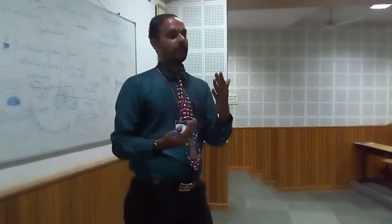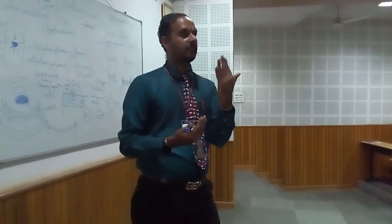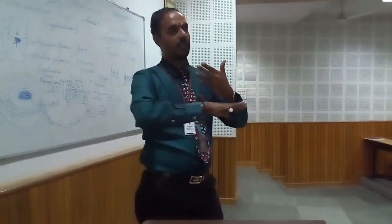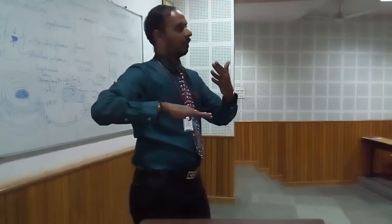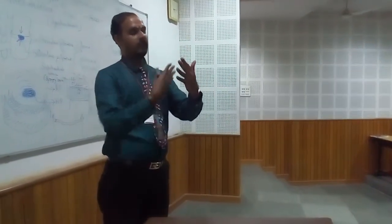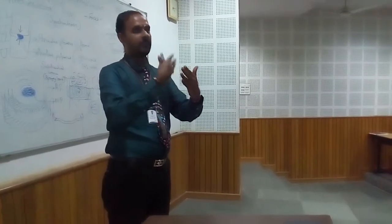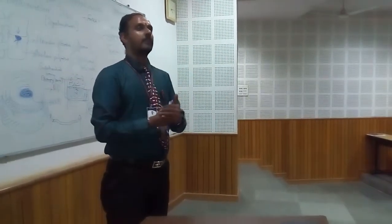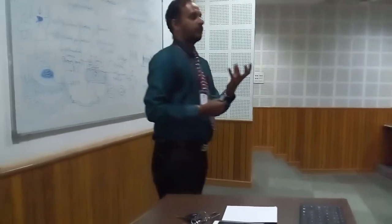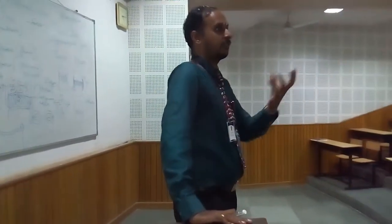In the annulus fibrosus, the fibers are not vertical — they are arranged obliquely at 45 degrees to the cartilaginous end plate. One layer is arranged obliquely in one direction, and the next layer is arranged obliquely in the opposite direction, approximately 90 degrees to the adjacent layer. The central portion is the nucleus pulposus, which is gelatinous, while the annulus fibrosus is fibrous.